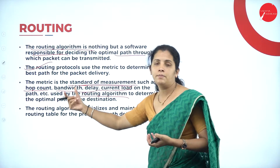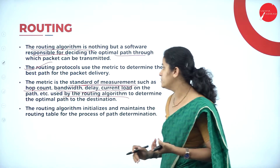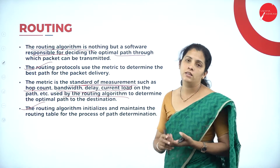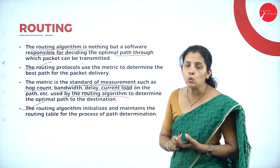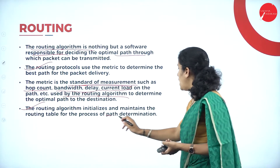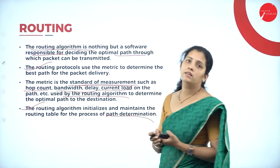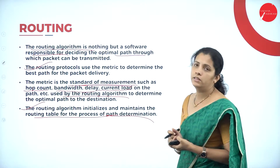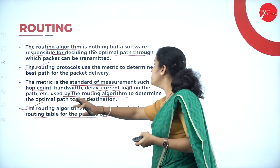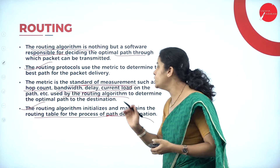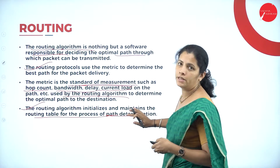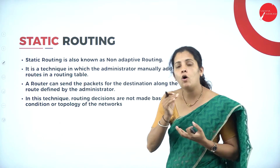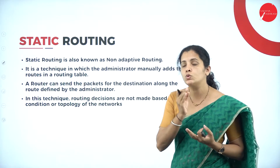The optimal solution is the best solution to reach the destination. The routing algorithm initializes and maintains the routing table for the process of path determination. In summary, routing is mainly based on selecting the best path among all possible paths in order to transfer data from source to destination.